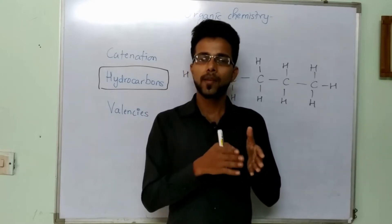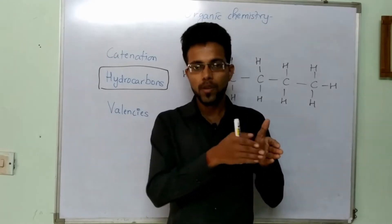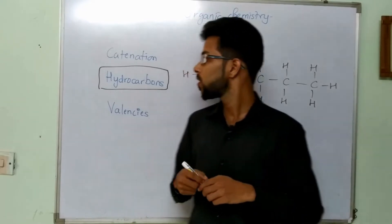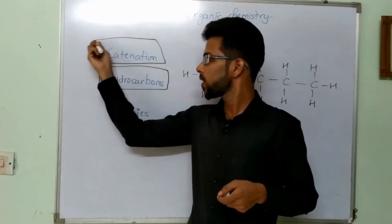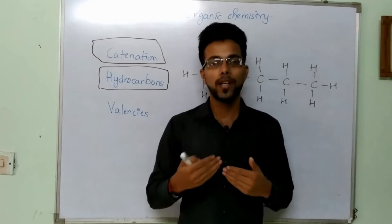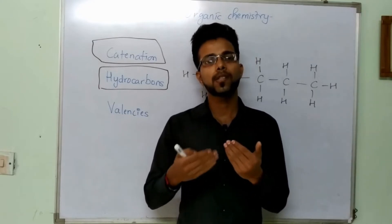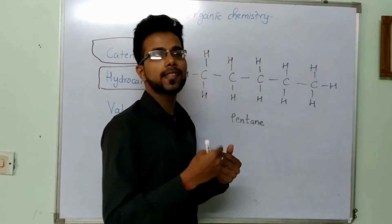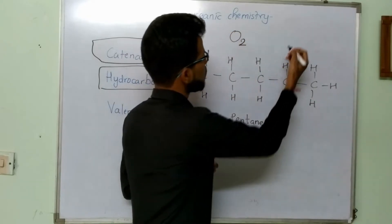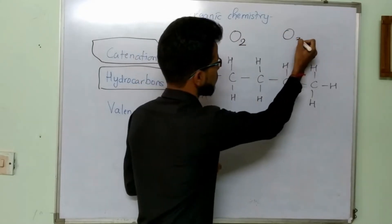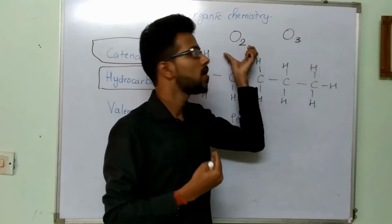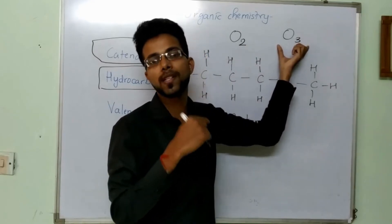Why does carbon have the ability to form long continuous chains? This is because of a property called catenation — a unique property which only carbon has. Other atoms like oxygen exist in nature in only two forms: O2, which is the oxygen we breathe, and O3, which is ozone, present in the upper atmosphere and protecting us from UV radiations.